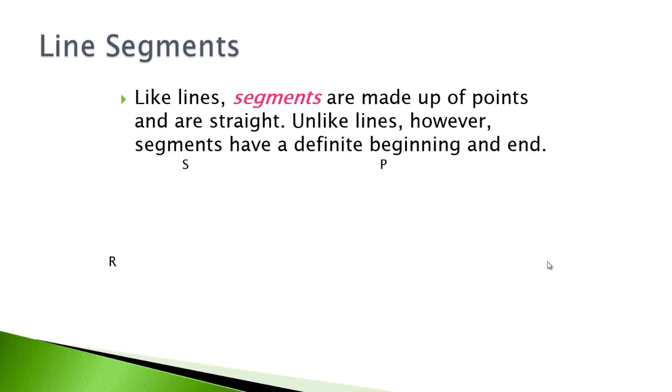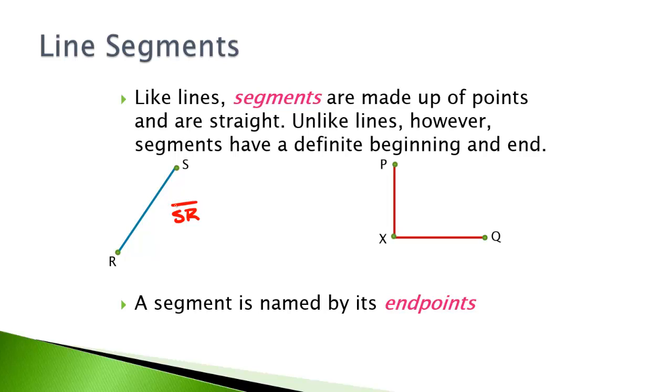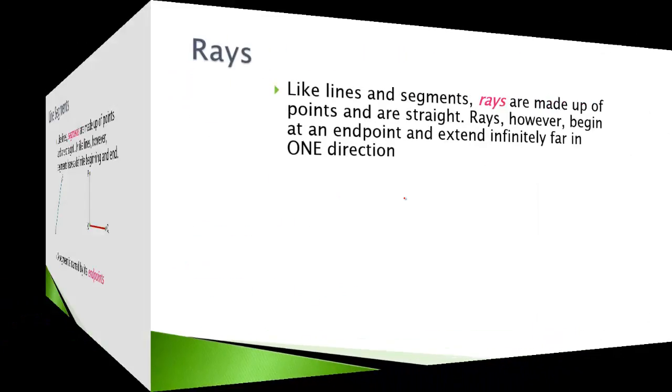Line segments are different than lines because they're made up of points and are straight - that's how they're similar. What sets them apart, though, is they have a definite end and beginning. It's named by its endpoints. Use this notation. Notice there's no arrows on the end, it's just this line without the arrows. So we could call that segment SR or segment RS. The same rules apply as long as it's on the same segment. You can use any two letters. Like here, there's actually two segments. You have segment XP or PX, and you have segment XQ or QX. You've got to make sure that you have the proper notation because it can get confusing with lines and line segments. You've got to remember with lines to include those arrows.